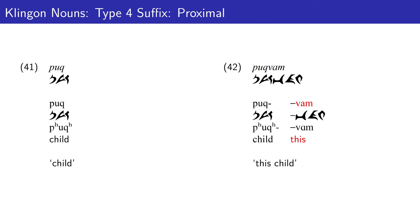The final two type 4 suffixes mark 'this' or 'that' — something close to you or farther away from you. Here we have the word for child. To refer to 'this child', implying the child is close by, we say 'pohvam'. Or if the child is further afield — 'that child' — we say 'pohvetlh'.